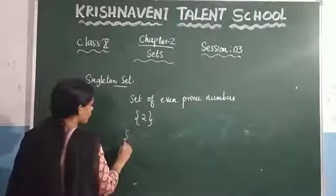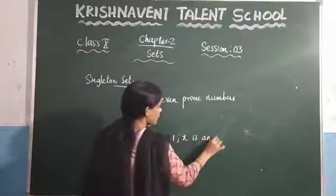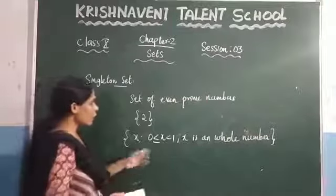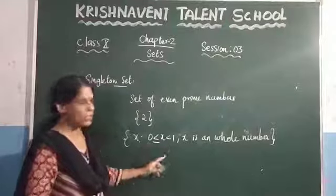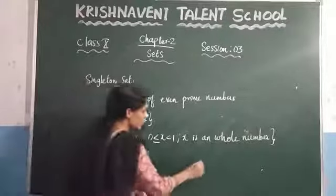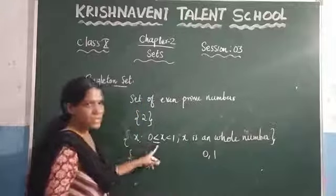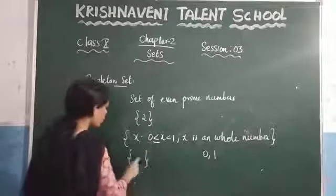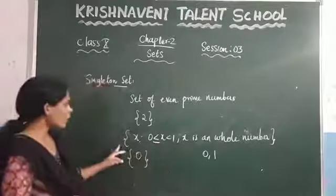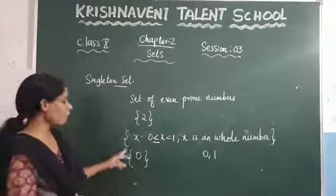Consider one more example: the set of x such that 0 ≤ x < 1, where x is a whole number. We need to write what elements lie between 0 and 1 as whole numbers. Whole numbers start from 0 and 1; between these two numbers no element is present. Since the equality symbol is on the left, we include 0, but we do not include 1. So 0 is the only element present, making this a singleton set.